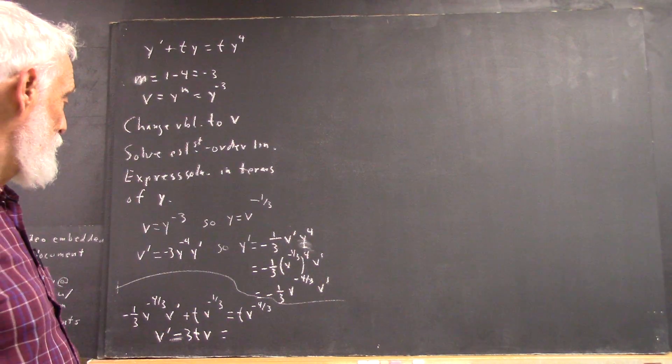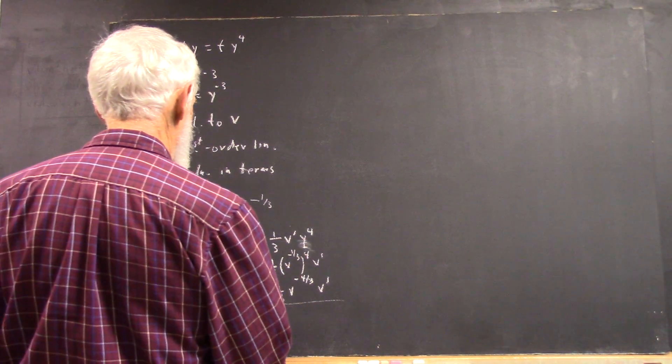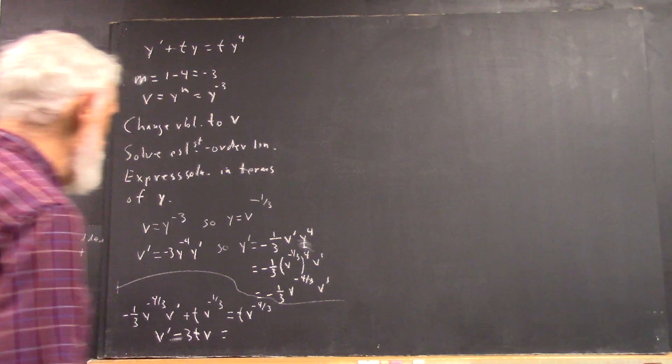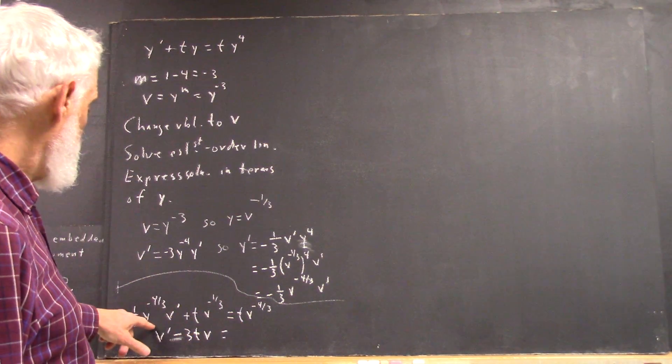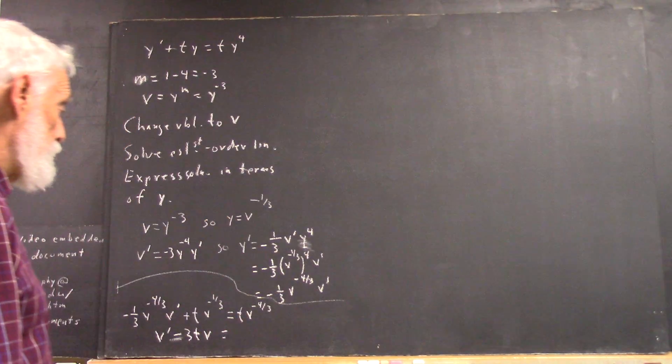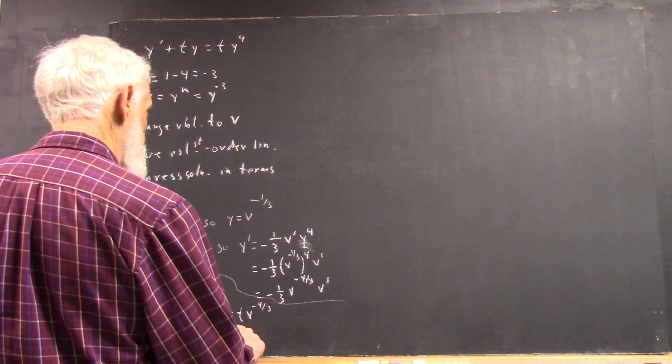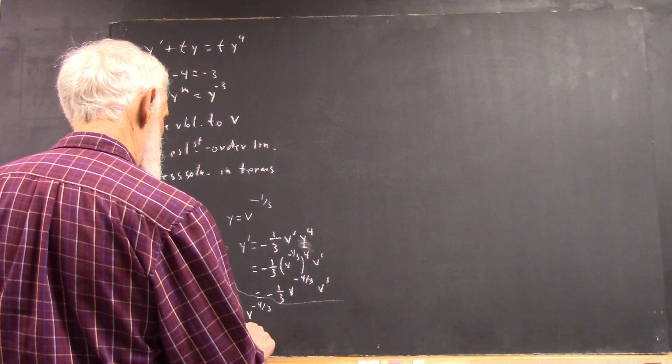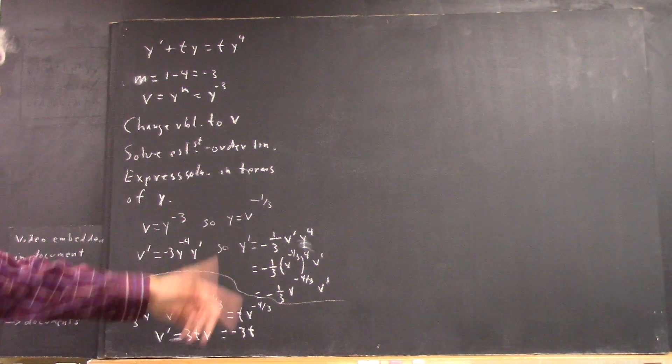And then that equals what? This has to be just a function of t, but that's exactly what happens because you're multiplying by v to the four-thirds. v to the four-thirds times v to the negative four-thirds gives you v to the zero, which is one.